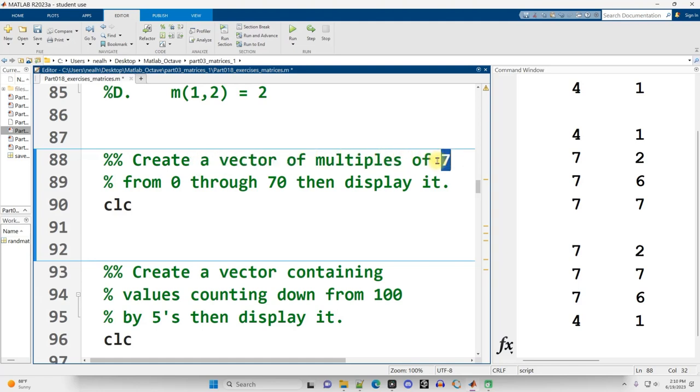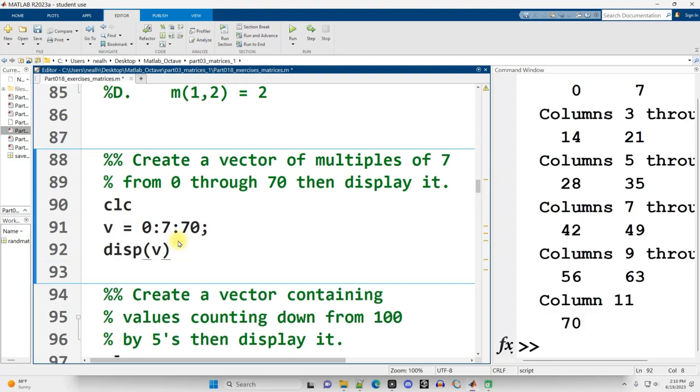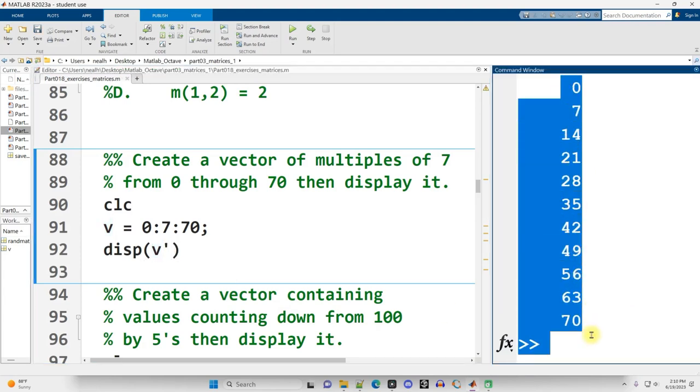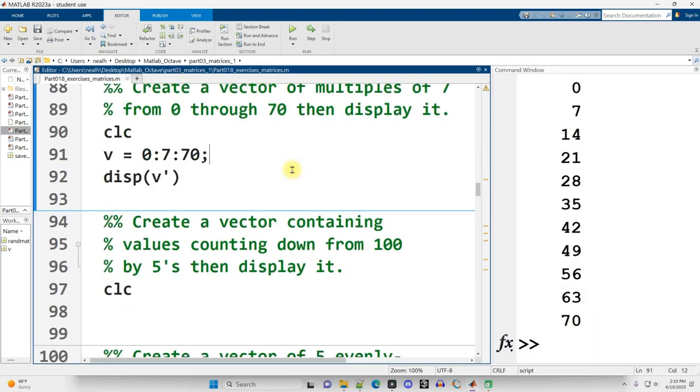Create a vector of multiples of seven from zero through 70 and then display it. So this to me suggests use of an interval. So I'm going to say V equals 0, colon 7, colon 70. And then I'll display it out with a display. It's a little hard to read. Let's transpose it with an apostrophe. All right. That looks like multiples of seven from zero to 70. Continuing on down.